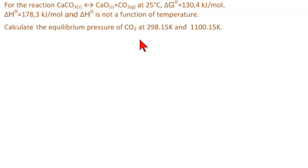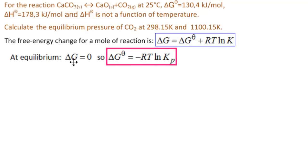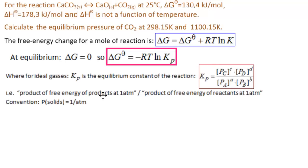There are two parts to this problem. Because CaCO3 and CaO are both solids, we are left with just the CO2 gas. The free energy change per mole of reaction is ΔG = ΔG° + RT·ln(K), where K is the equilibrium constant. At equilibrium, ΔG = 0, so we get ΔG° = −RT·ln(Kp).